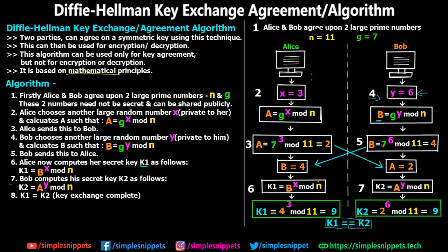N, G, A, and B were all shared over the insecure network. However, X — Alice's private number — and Y — Bob's private number — were never shared. So the hacker cannot calculate B^X because he doesn't have X, and cannot calculate A^Y because he doesn't have Y. Even though the hacker has B, A, N, and G, without X and Y he cannot compute the final key. There is a drawback, however — a man-in-the-middle attack — which we'll cover in the next video.